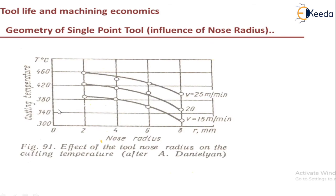And then you can see the nose radius versus cutting temperature. So as the nose radius is increasing, the cutting temperature is decreasing. And that is what we discussed in the previous slide. So this is given for different cutting speeds. And if the cutting temperature is decreasing, then we will be having a higher tool life.